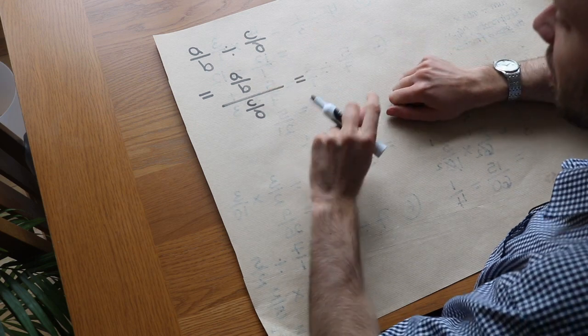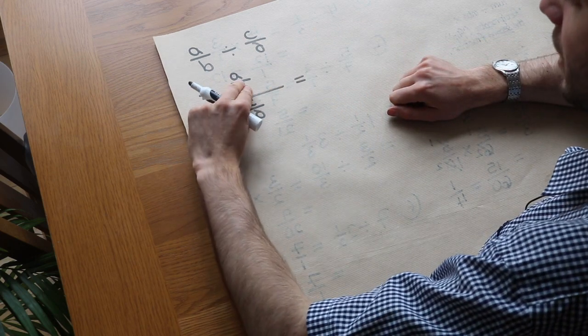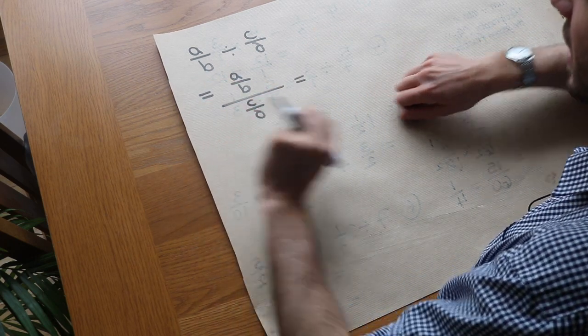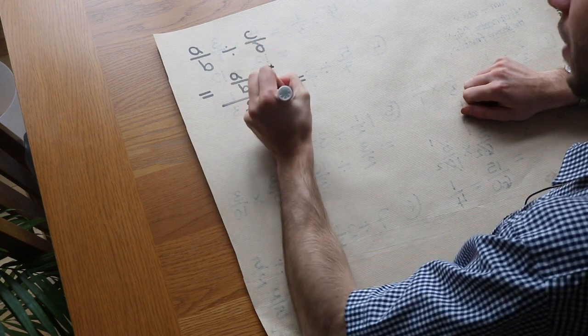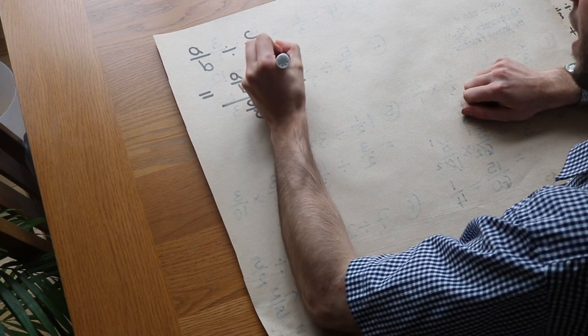Now we don't like fractions within fractions. We want to get that /b inside the numerator and get rid of that /d. So what we can do is multiply top and bottom by b and d.